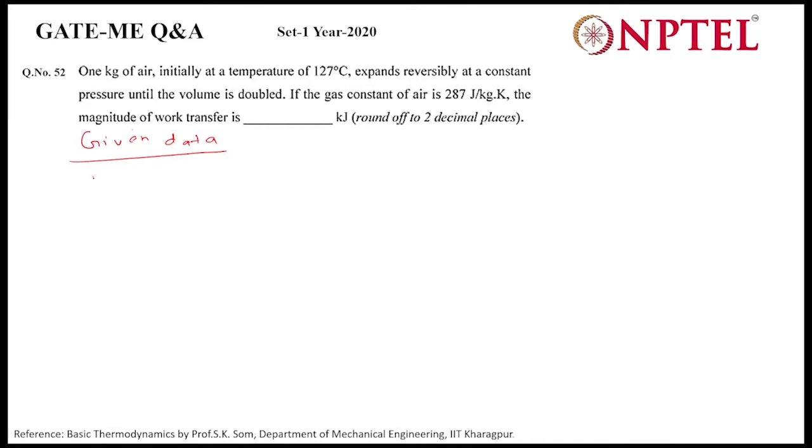Initial temperature is given as T1 equal to 127 degree Celsius. Converting to kelvin, it will become 400 kelvin. Next, expands reversibly at constant pressure until volume is doubled, means V2 is equal to two times V1.